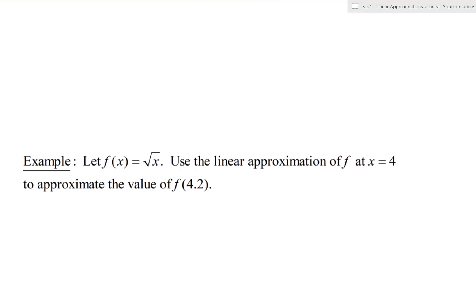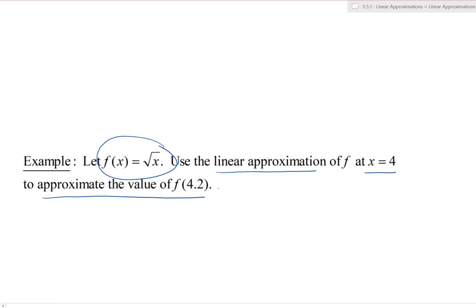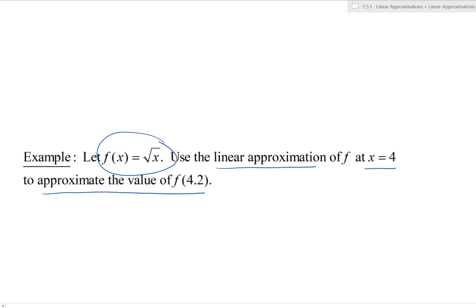Let's look at an example. We have the function f(x) = √x. We'll use the linear approximation of f at x = 4 to approximate the value of f(4.2). The first thing we need to do is find the linear approximation. To find L(x), we need the equation of the tangent line at x = 4 for the function √x.